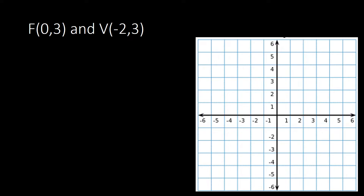We plot those on our Cartesian plane. Focus (0, 3) is where x is 0 and y is 3. Vertex (-2, 3) is at negative 2 on the x-axis, moving up to 3 on the y-axis.